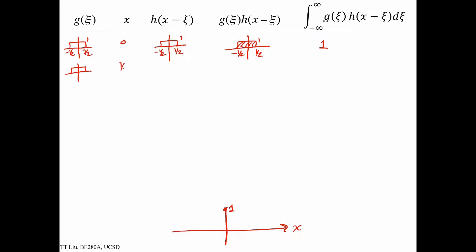Now let's consider x equals one-half. We want to draw rect of one-half minus xi. We've plugged in one-half for x, so this is going to be a rect function centered around one-half, with amplitude one. If we multiply this rect function by our original rect function, the only overlap is from zero to one-half. The area of that multiplication is one-half. So at x equals one-half, the convolution has a value of one-half.